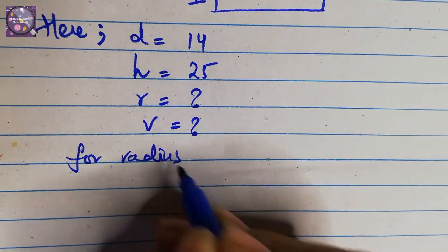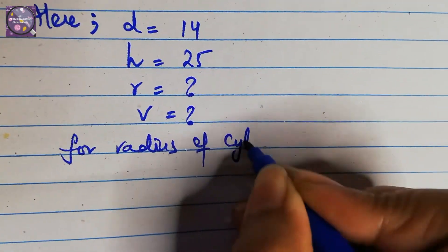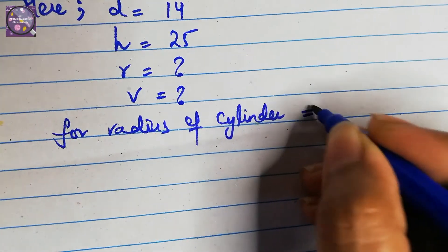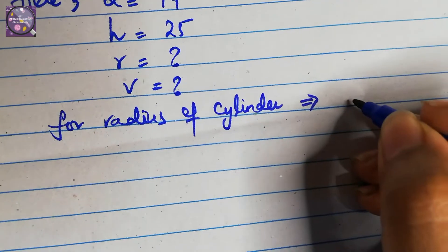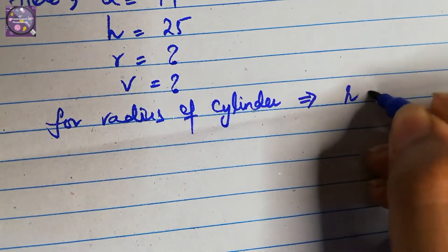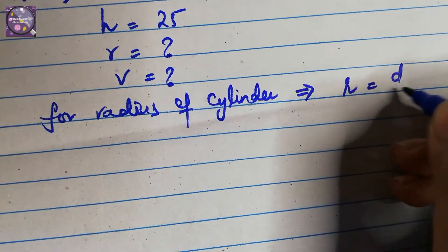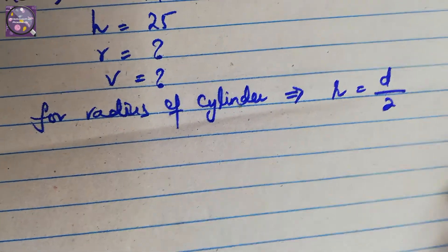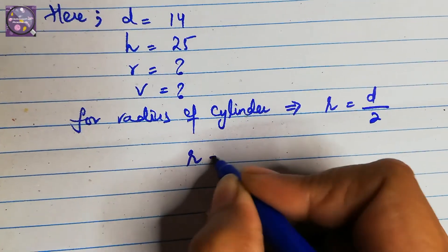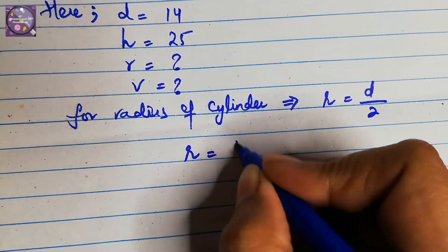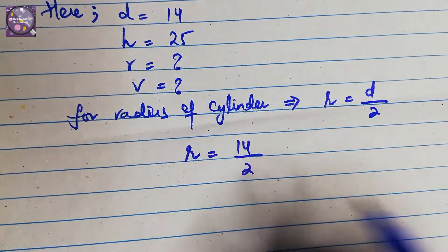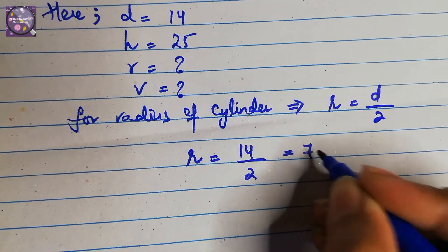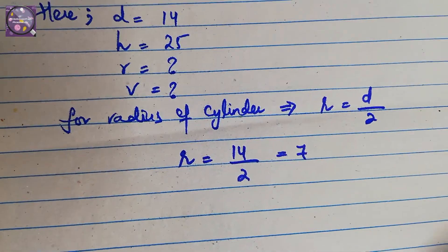We put the formula for the radius of a cylinder: radius is equal to depth divided by 2. We put the value of depth — 14 divided by 2 equals 7. So we found the radius as 7.